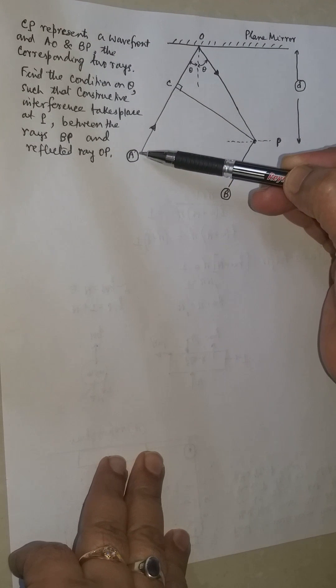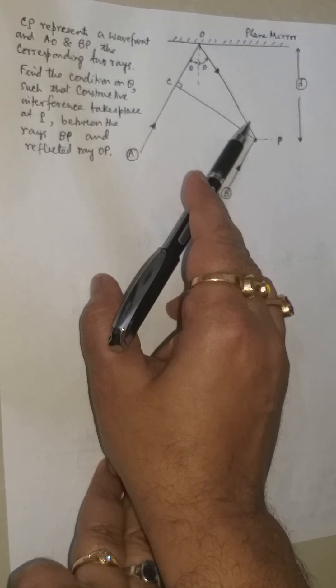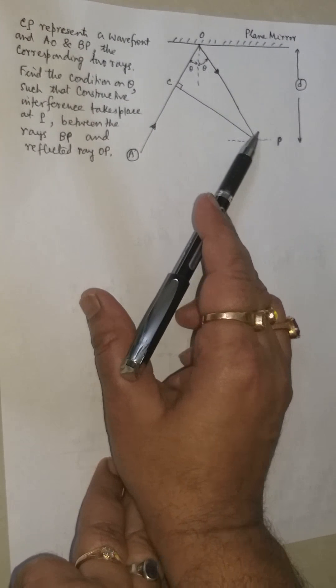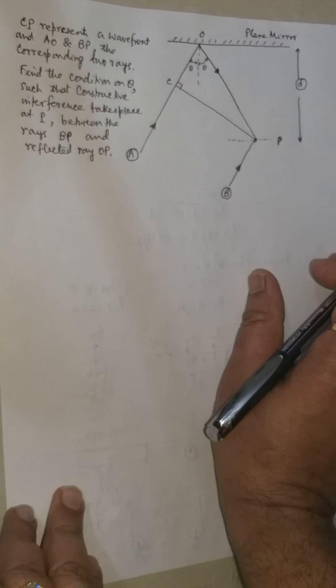The ray of light AO reflects from O, and OP is the reflected ray. The angle of incidence and reflection are theta respectively.